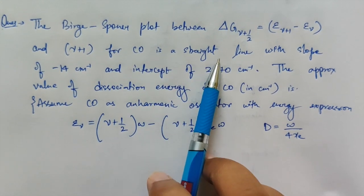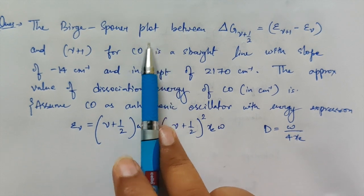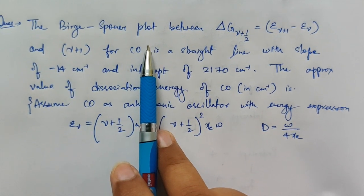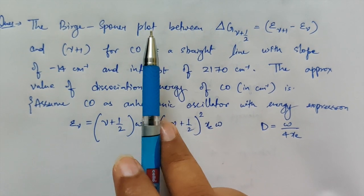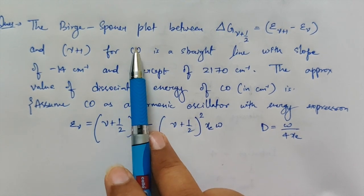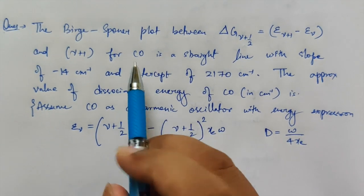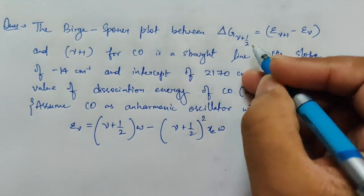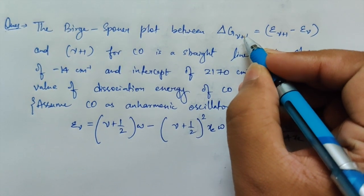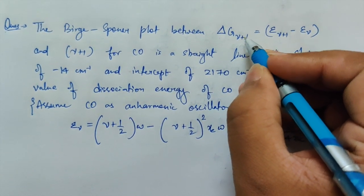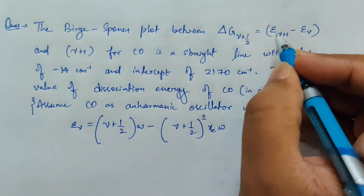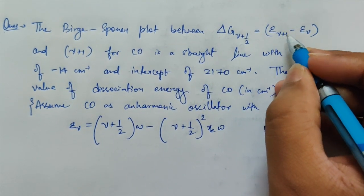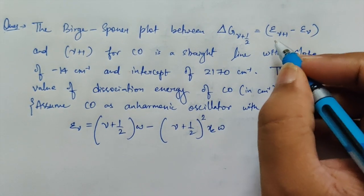It was a pretty simple and easy question — everything was given to you in the question, but it was a little tricky to solve. The question says that the Birge-Sponer plot between ΔG(ν+½), which equals ε(ν+1) minus ε(ν), is plotted. Here ν is the vibrational state being referred to.